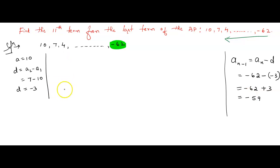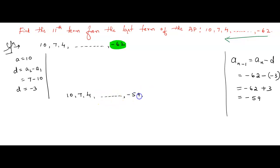So we can write one more new sequence: 10, 7, 4 and so on, ..., minus 59, minus 62. This is our new sequence. Minus 59 comes just before minus 62.